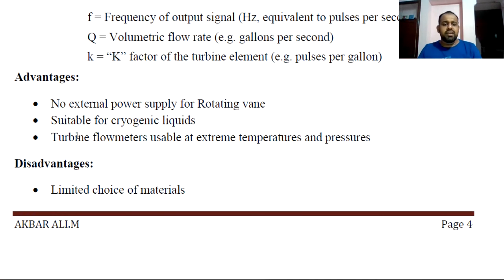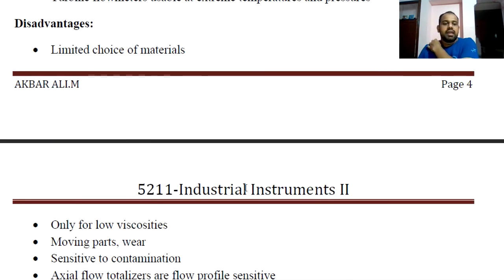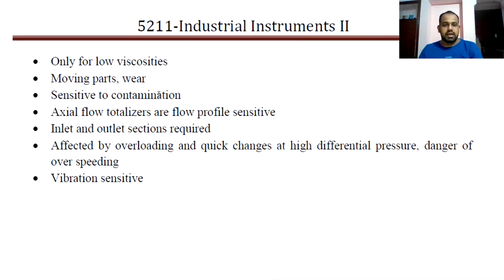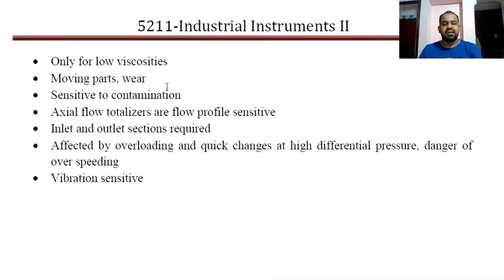Advantages include: requires external power supply for the rotating element, suitable for cryogenic liquids, and turbine flow meters are usable at extreme temperatures and pressures. Disadvantages include limited choice of materials, and it is only suitable for low viscosity fluids — viscosity is a key limitation for flow measurement.